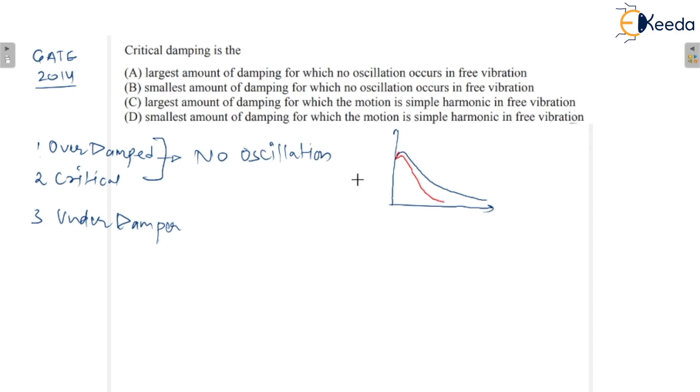So you can see what is the difference between these two. The difference is that critical damped system is the smallest amount of damping. This is the smallest amount of damping because it becomes zero as fast as possible.